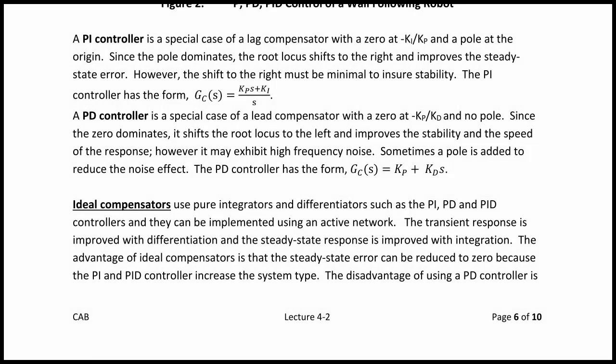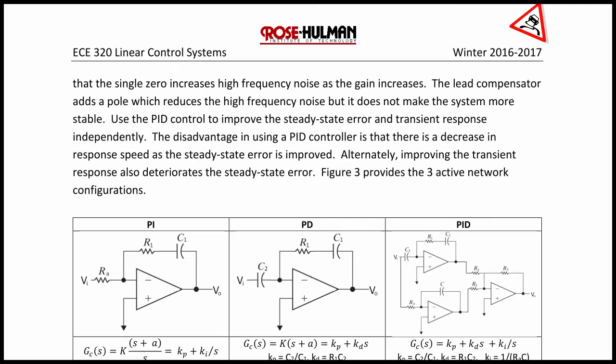Ideal compensators use pure integrators and differentiators, such as the PI, PD, and PID controllers, and they can be implemented using an active network with an operational amplifier. The transient response is improved with differentiation and the steady-state response is improved with integration. The advantage of ideal compensators is that the steady-state error can be reduced to zero because the PI and PID increase the system type. The disadvantage of using a PD controller is that the single zero increases high-frequency noise as gain increases; the lead compensator has a pole which reduces the high-frequency noise but does not make the system more stable.